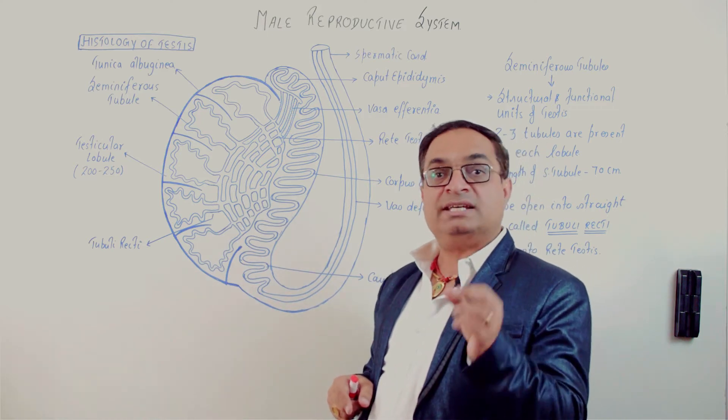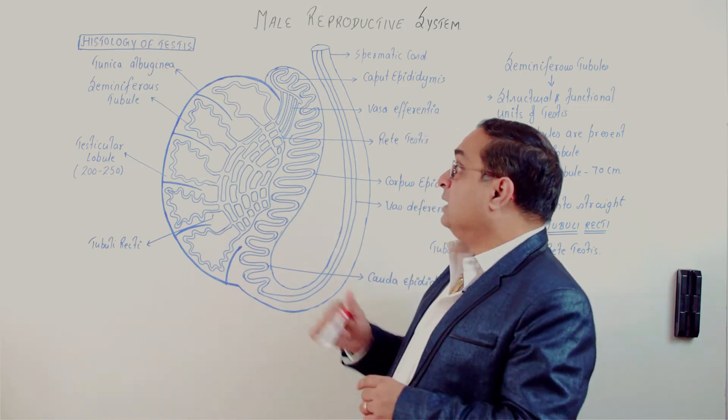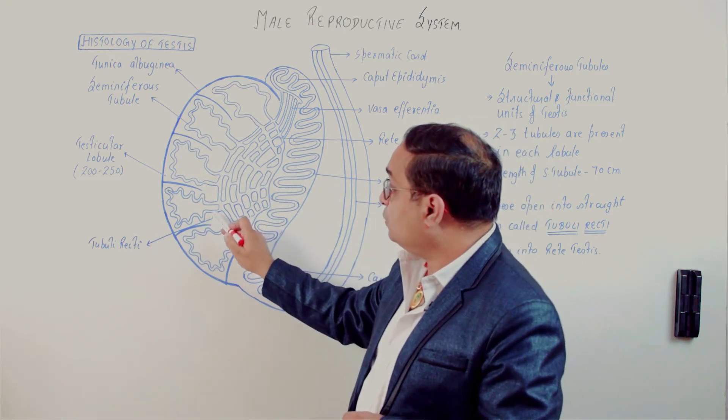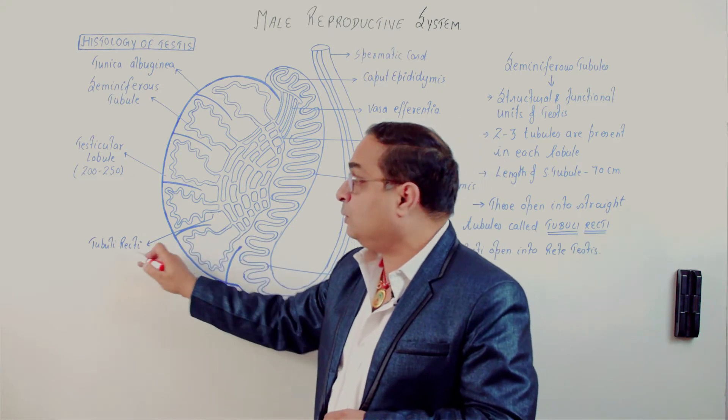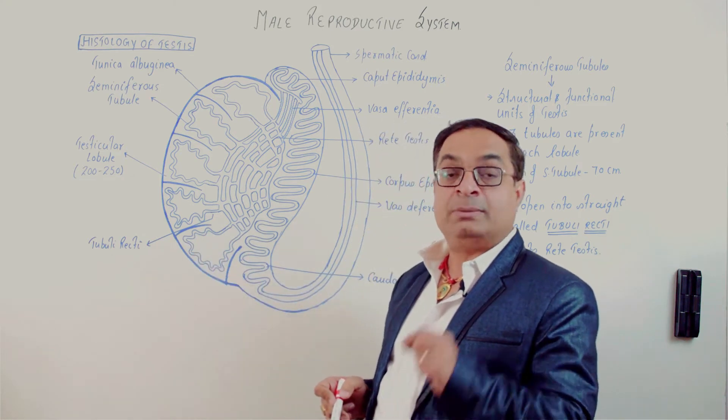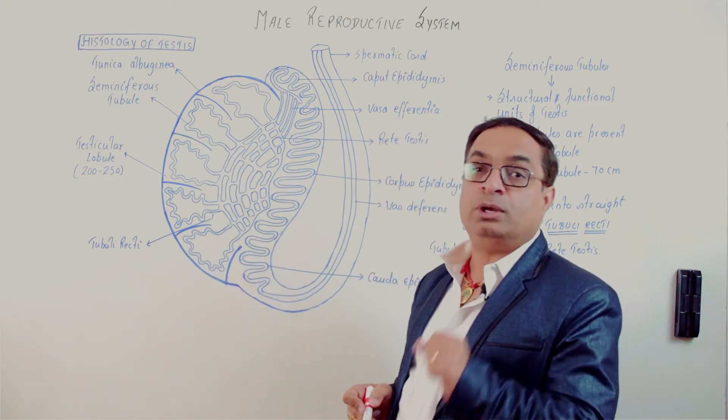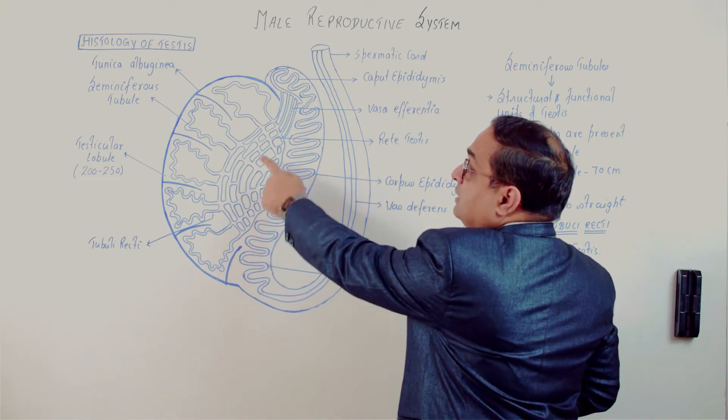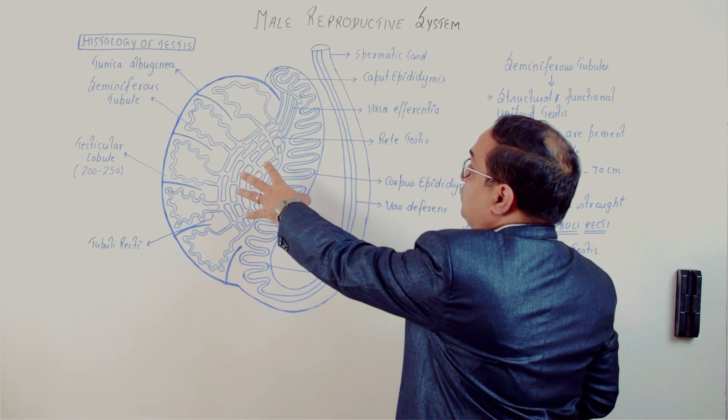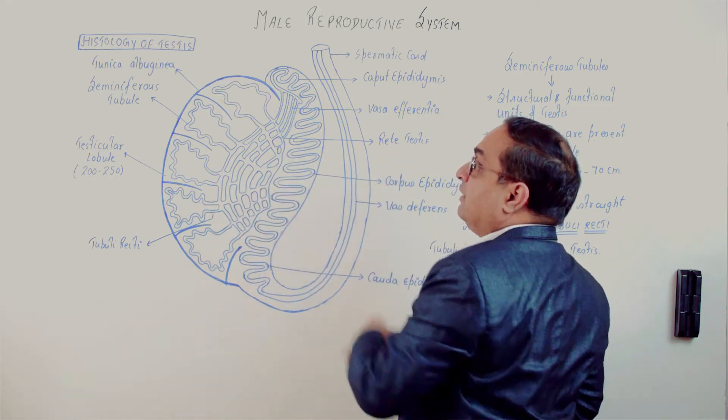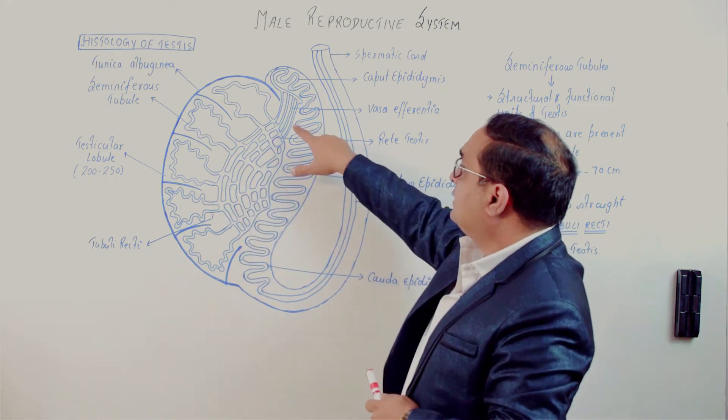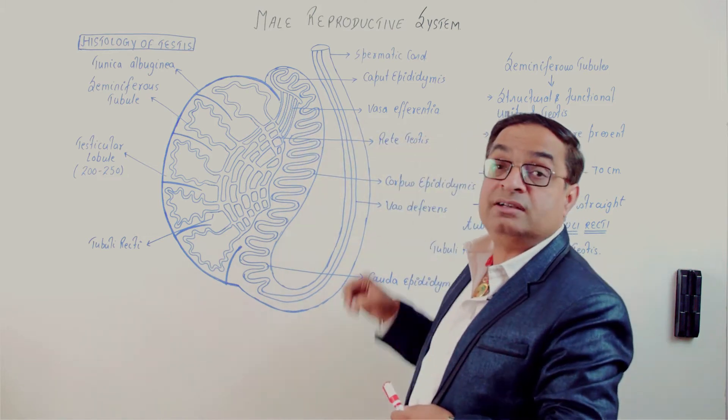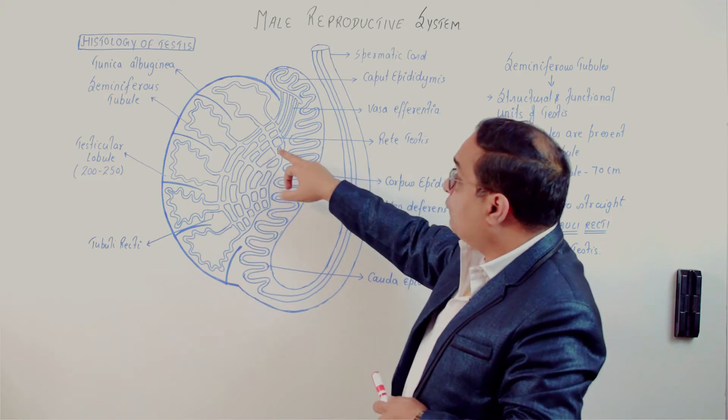These highly convoluted seminiferous tubules open into straight tubules called tubuli recti. Tubuli recti open into this network called the rete testis. Then these tubules called vasa efferentia or efferent ductules originate from rete testis and carry sperm to the head of the epididymis.